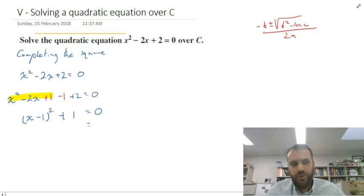From there we just solve it, move the plus 1 over to the other side, negative 1, square root both sides, x minus 1, square root of negative 1. Ooh, square root of negative 1.